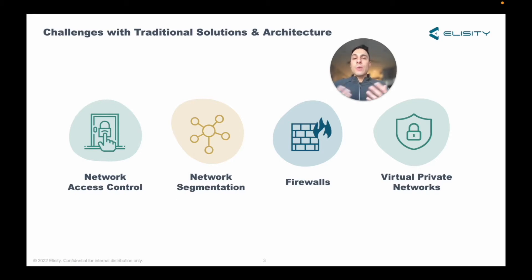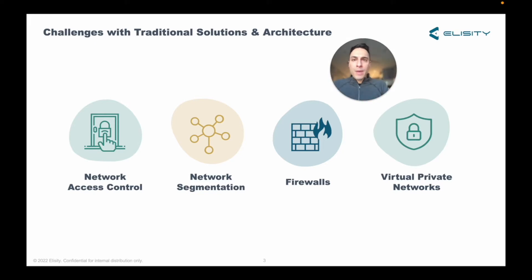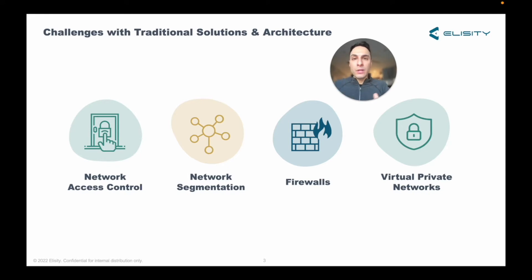Traditional methods of network security had little to no way of effectively gleaning identity of all the different things on the network — people, applications, managed and unmanaged devices. They really had no advanced way to glean identity. People started using 802.1x, and that's been used for some time, but it was a pain to configure. It was managed port by port, and organizations really only went so far as implementing 802.1x for wireless client-based identity because that was the easiest way to deploy it.